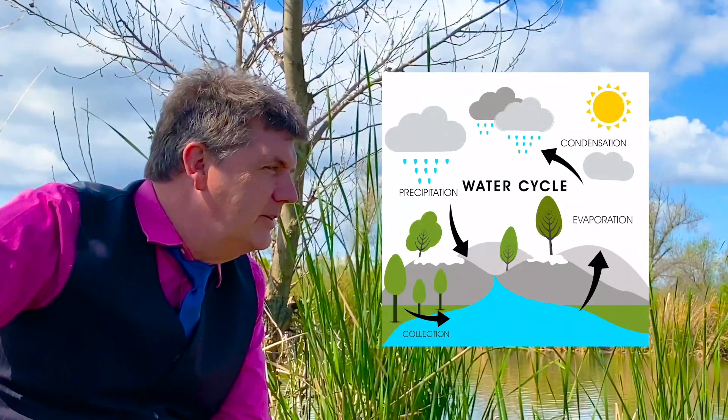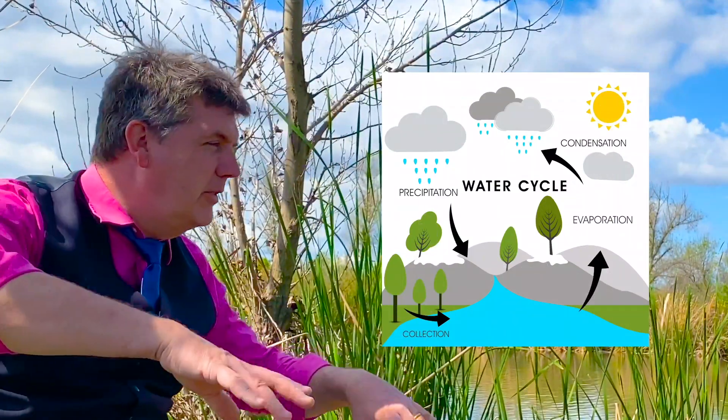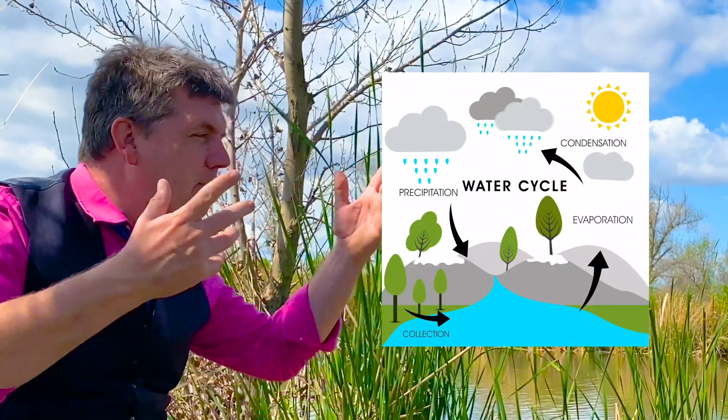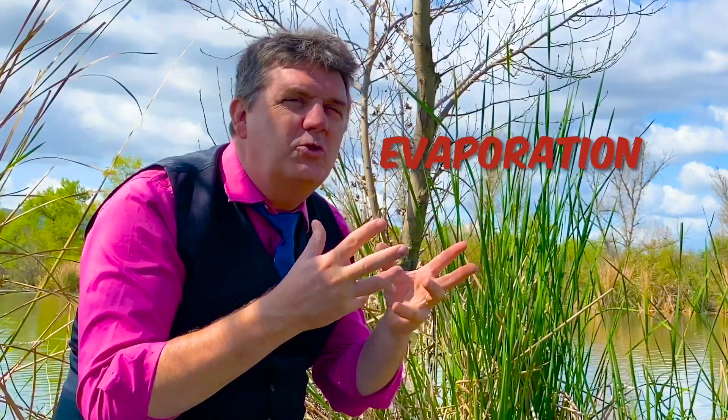Did you know the clouds are part of the water cycle? Because all the water from on the ground, it evaporates — it goes up, up, up, up. It goes through condensation.